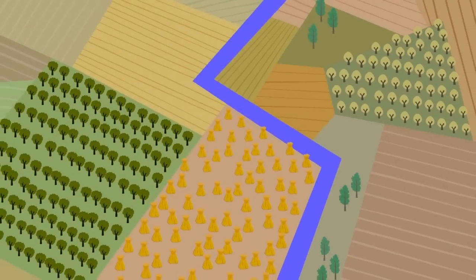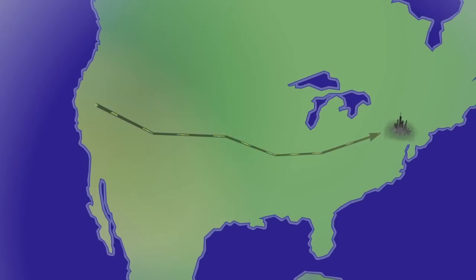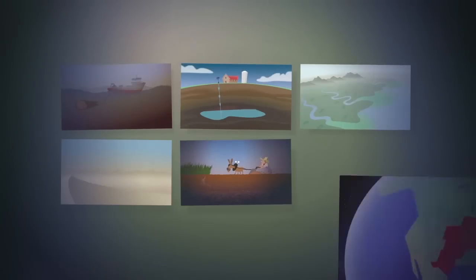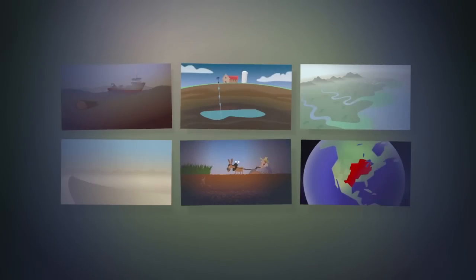In America, food travels approximately 1,500 miles from farm to customer. Besides fossil fuel decline, there are several threats to the current system of food production.